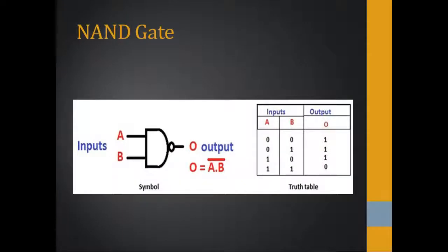This is the symbol of the NAND gate and the Boolean algebra form of the NAND gate, where O represents the output and A and B represent the inputs. The bar on both of them represents inversion — when the output is zero it changes to one, and when the output is one it changes to zero.